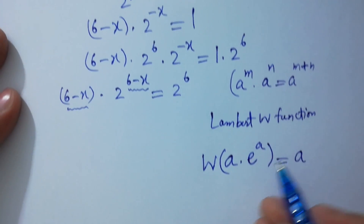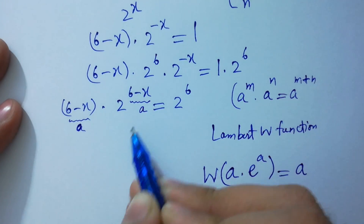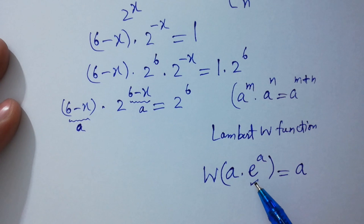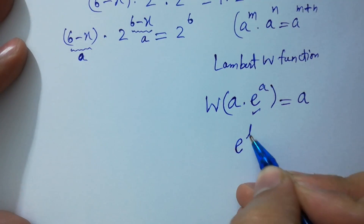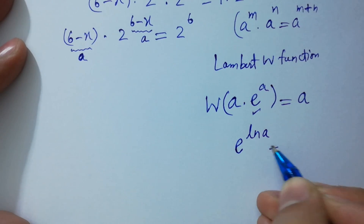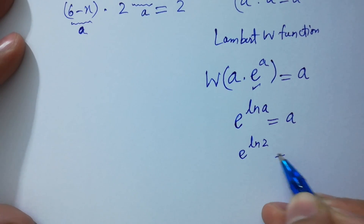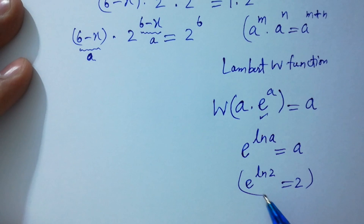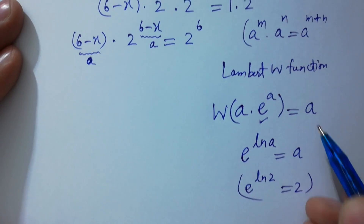Just like you can see here, a is (6 minus x) and here a is also (6 minus x), but here the base is 2, not e. You have to convert this 2 into e. Since e to the power natural log a equals a, similarly e to the power natural log 2 equals 2. So I am going to convert 2 into e to the power natural log 2 to get the shape of the Lambert W function.